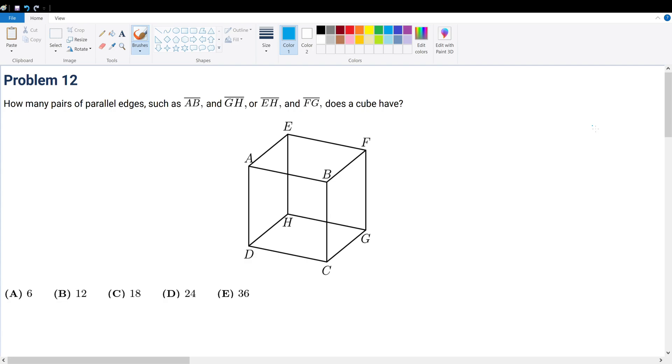Problem 12. How many pairs of edges, such as AB and GH, or EH and FG, does a cube have?